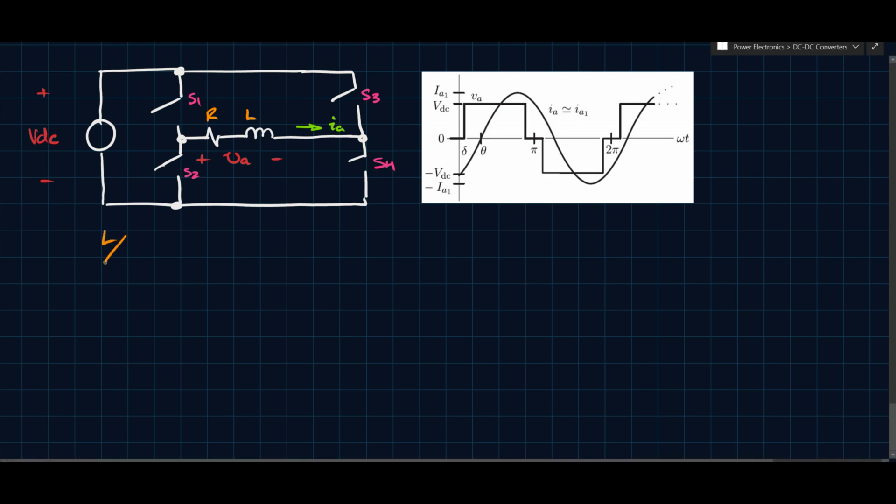The assumption is this: If we can ensure that L over R is greater than pi over omega, then we can say that the third harmonic of the current IA is approximately 10% of the fundamental. So we can neglect it. If we ensure that this is true, then we can say that IA...